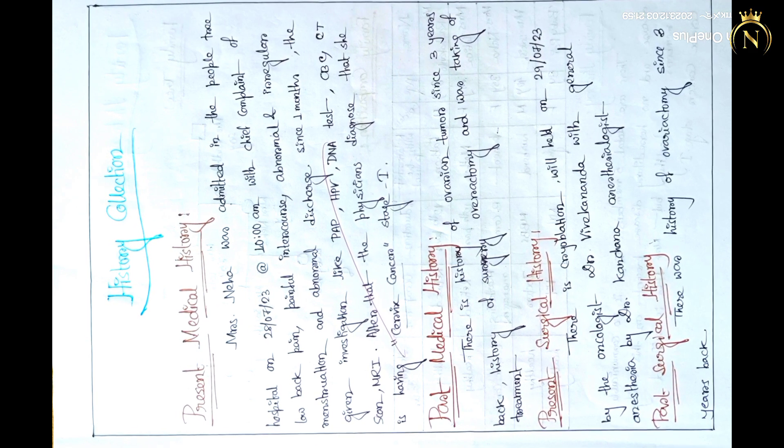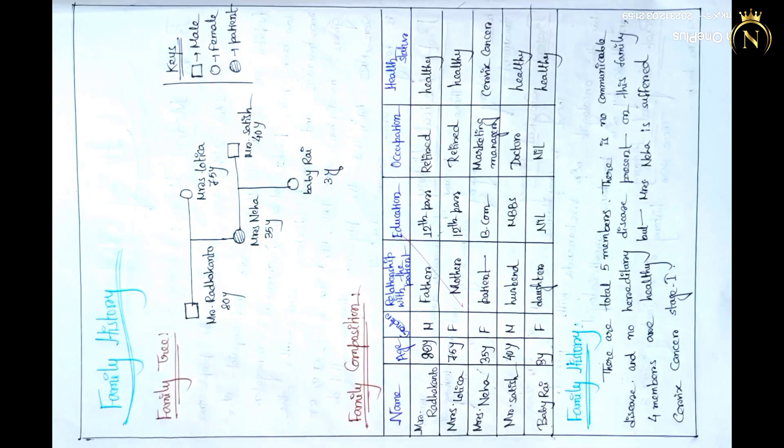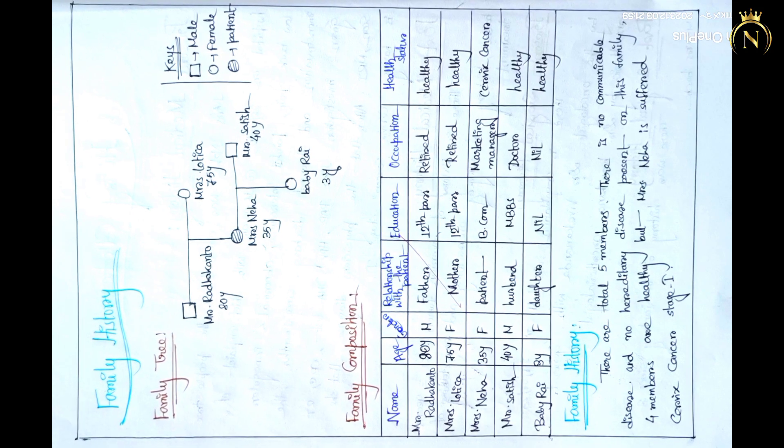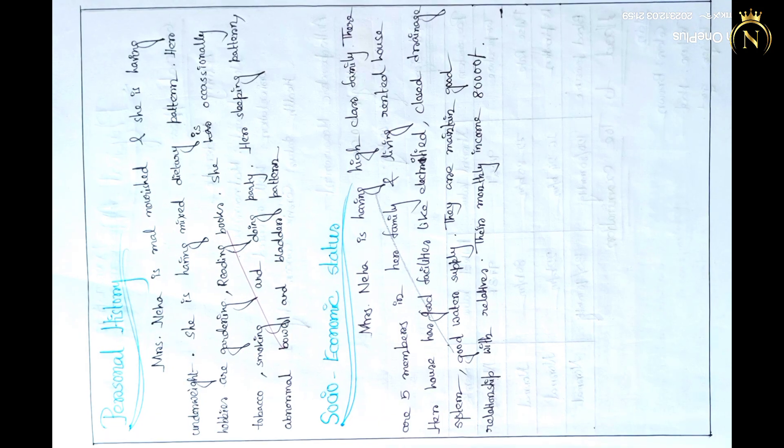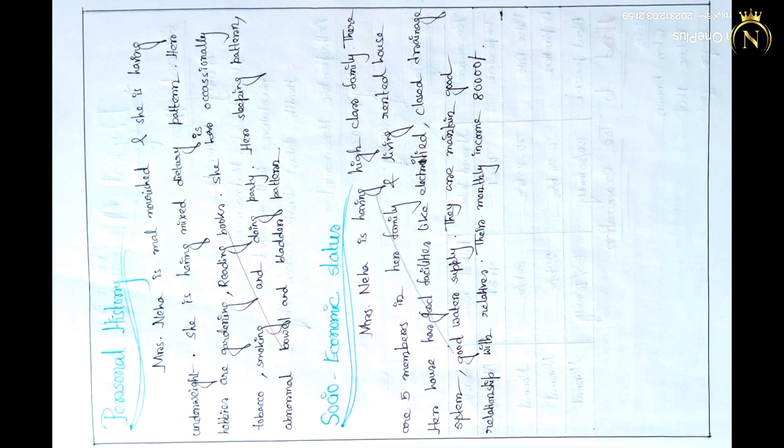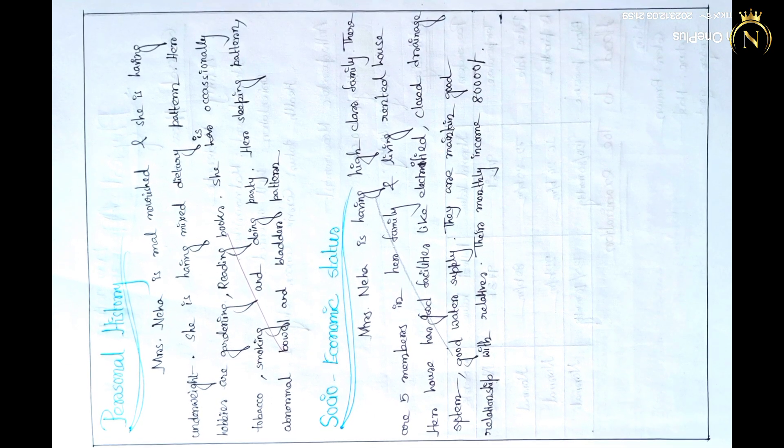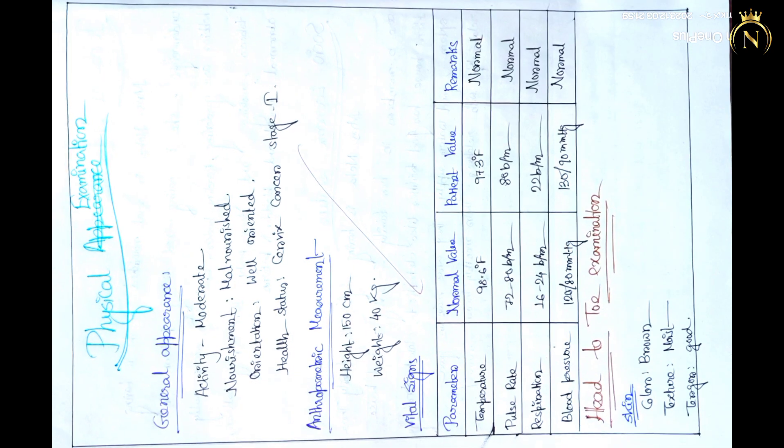For history, first is medical and surgical - patient medical and patient surgical history. In that also you can mention patient history like family tree, family composition, socio-economic history, personal history. Those are the history you can collect from the patient and write it down.